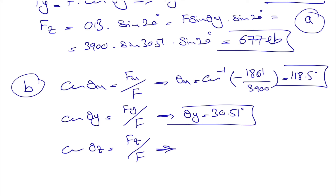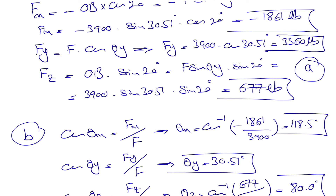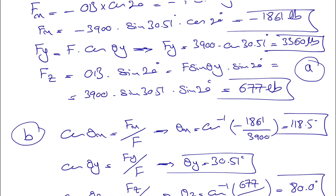The negative cosine value indicates the angle is between 90° and 180°, placing it in the second quadrant — confirming 118.5°. For theta_z, we take the inverse cosine of Fz/F = 677/3900, which gives us 80 degrees. That's the final angle with the z-axis, completing the answer for this question.